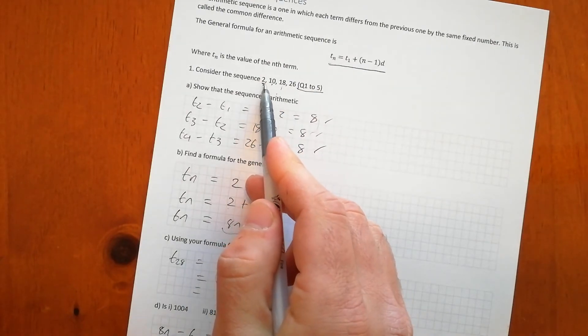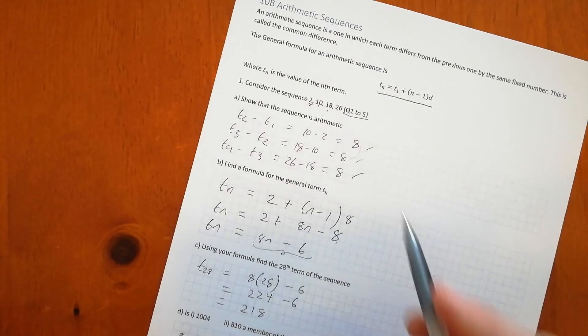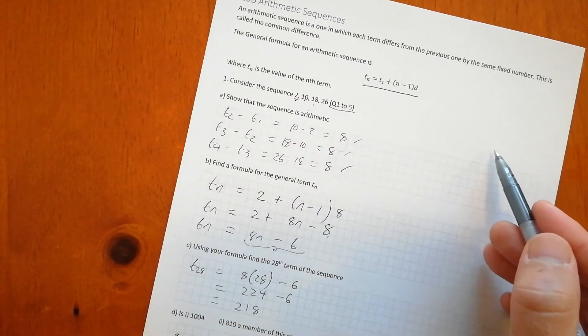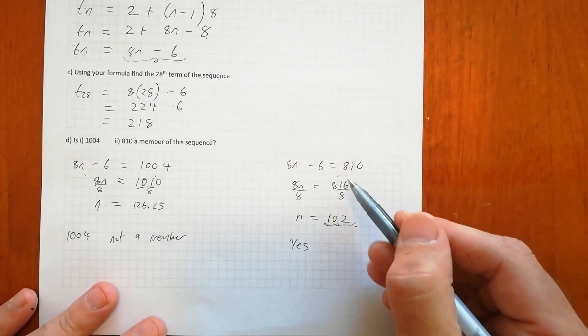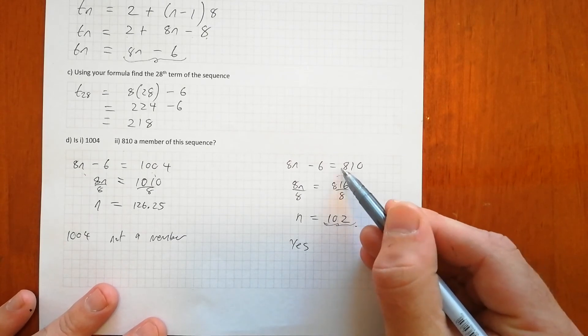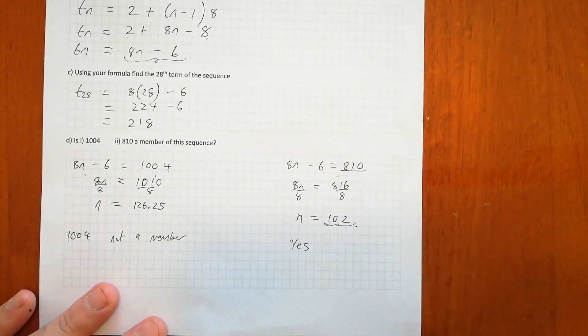And so what this means is the 102nd term of this sequence here. So remember up here we only listed the first four terms, but now we know if you were to write this sequence out to 100 terms, the 102nd term is going to be 810. That's what we've proved here.